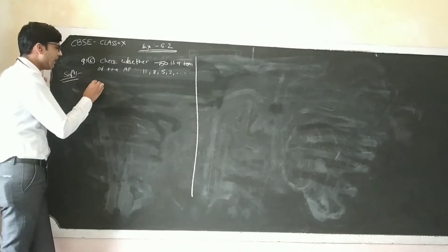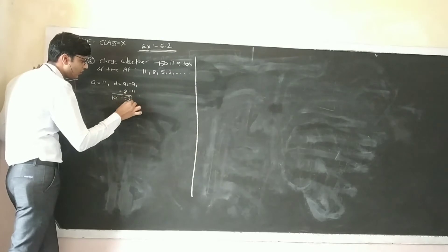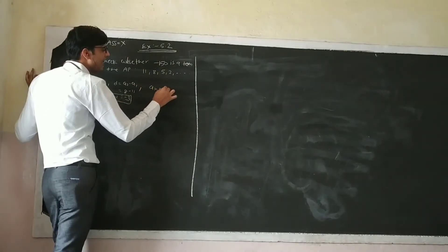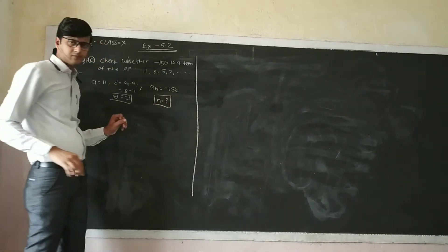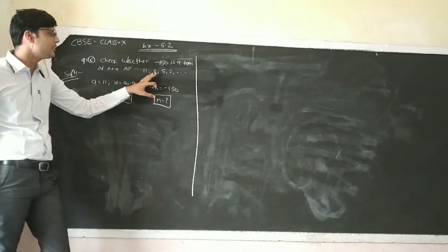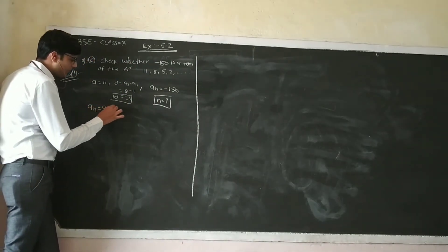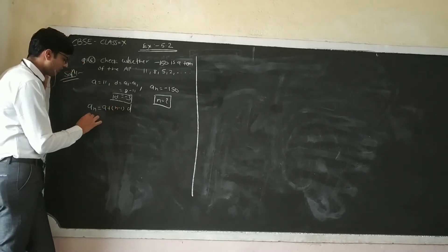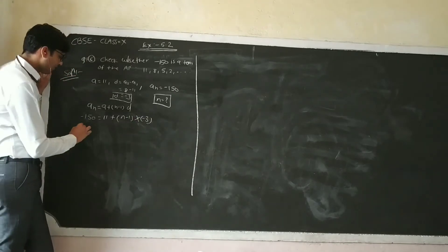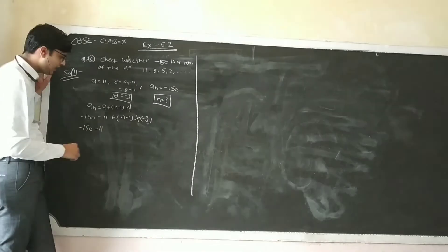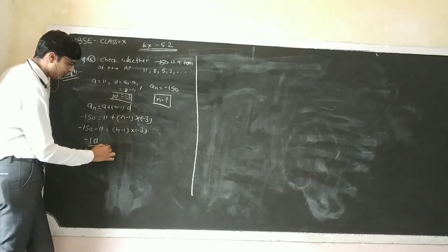So here A equals 11, and D equals A2 minus A1 equals 8 minus 11, which gives D equals minus 3. Suppose minus 150 is the Nth term. Using AN equals A plus (N minus 1) times D: minus 150 equals 11 plus (N minus 1) times (minus 3). So minus 150 minus 11 equals (N minus 1) times (minus 3), giving minus 161 upon minus 3 equals N minus 1.